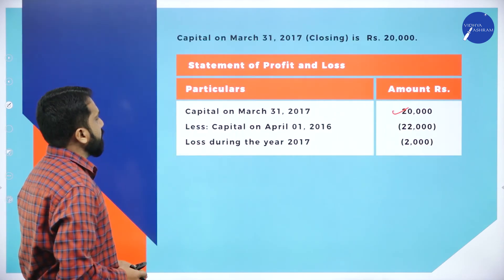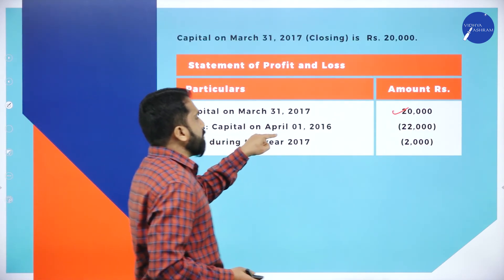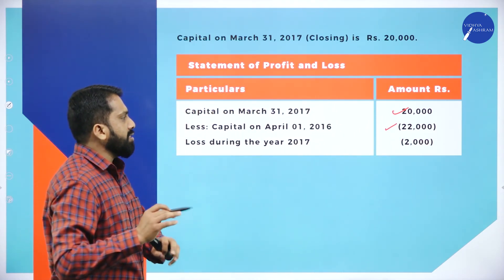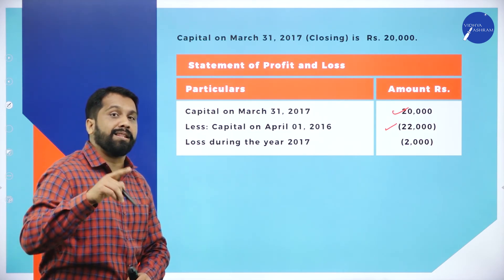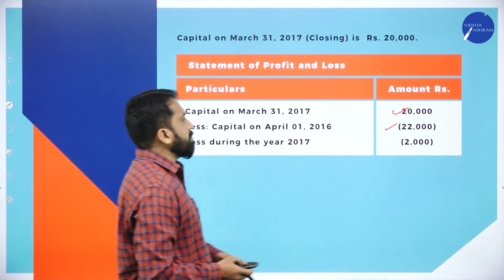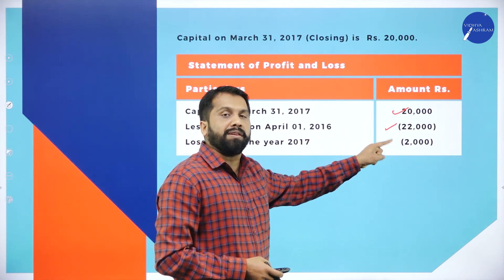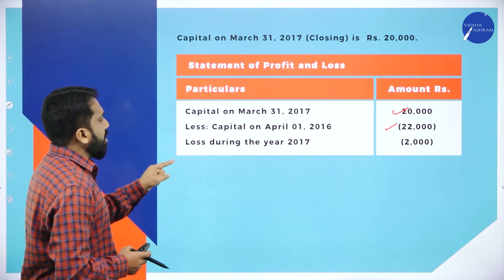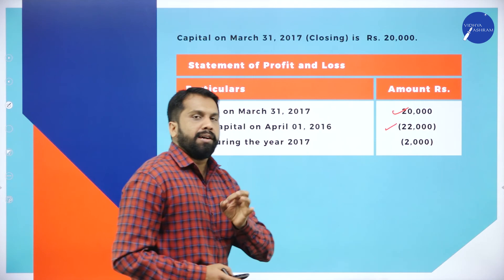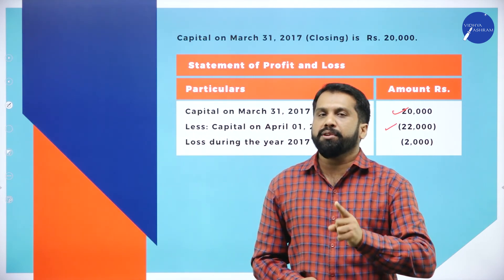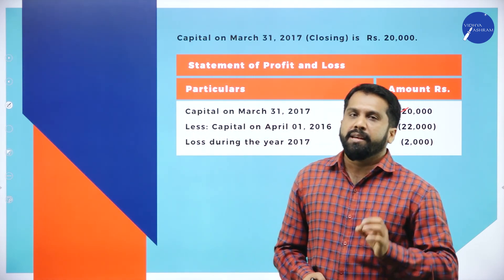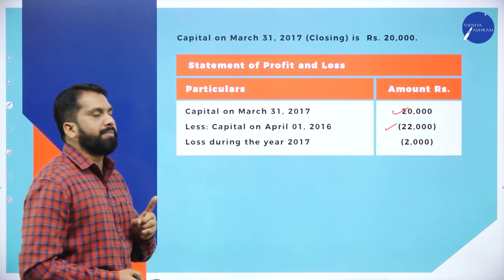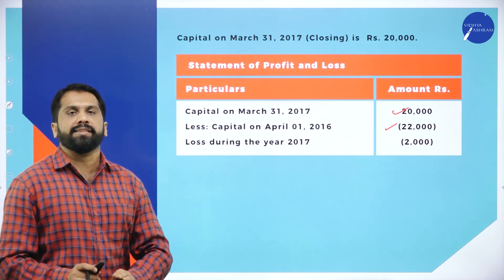So: closing capital of 2017 is 20,000 minus opening capital of 22,000. The answer is negative 2,000 — that means it is a loss, not a profit. Why? Because you have only 20,000 at closing but your opening was 22,000, so you have 2,000 less. Your loss during the year is 2,000. If the final answer is negative, it is a loss; if positive, it is a profit.